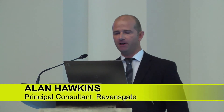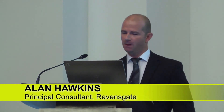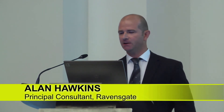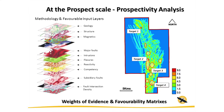Now we take all those data sets, refine them further, and then we come down to our exploration licence scale. As you can see there, what we've done is overlaid all those favourable layers.